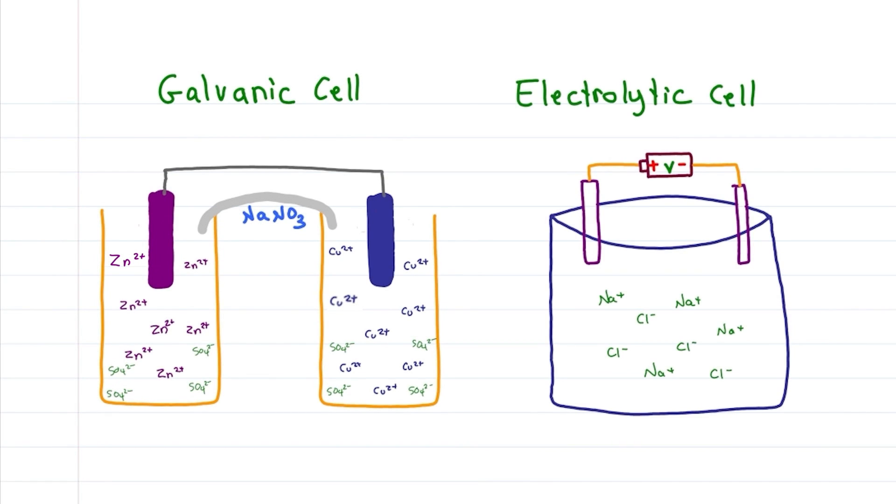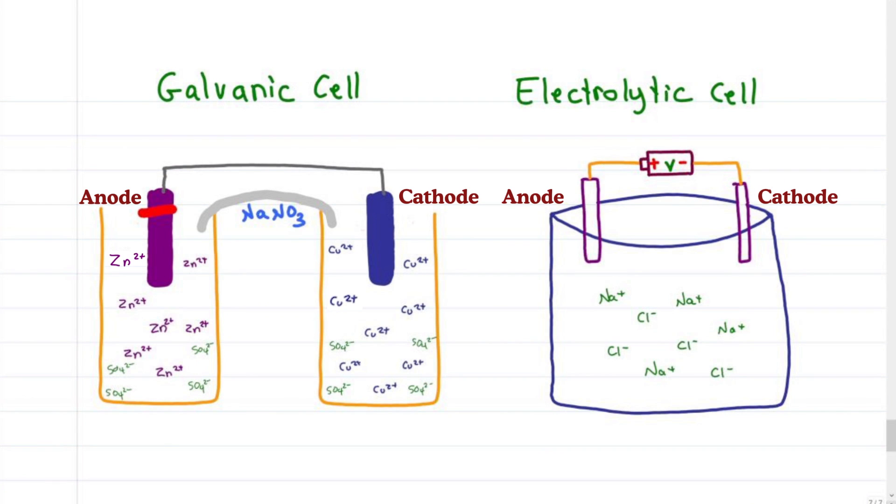Both galvanic and electrolytic cells operate on redox reactions at the anode and cathode. Then how is the anode negative in the galvanic cell but positive in the electrolytic cell? And why do electrons move towards oppositely charged electrodes?